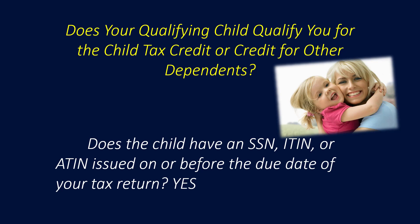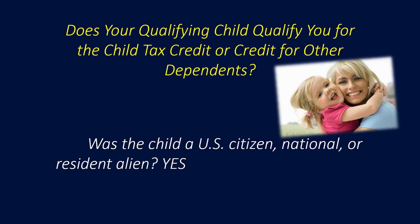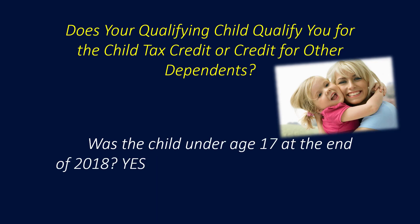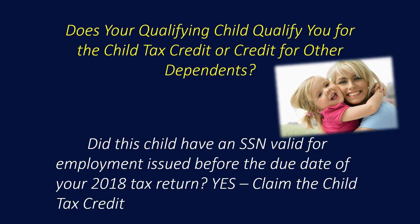Does your qualifying child qualify you for the child tax credit or the credit for other dependents? The credit for other dependents is new for 2018. Does the child have a Social Security number, an ITIN, or an individual taxpayer identification number issued on or before the due date of your tax return? If yes, was the child a U.S. citizen, national, or resident alien? If yes, was the child under age 17 at the end of 2018? Did this child have a Social Security number valid for employment issued before the due date of your 2018 tax return? If all these questions are answered yes, then the taxpayer can claim the child tax credit for 2018.